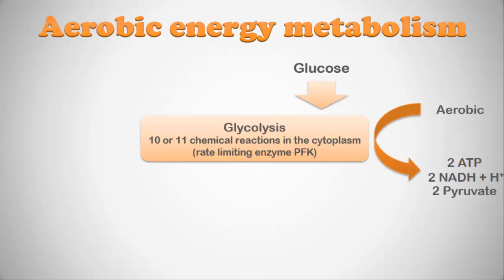Let's talk about aerobic glycolysis. Glycolysis is always anaerobic — what determines whether the overall process is aerobic or anaerobic is whether oxygen is available at the end. In aerobic glycolysis, we start mostly with glucose and get two ATP molecules, hydrogen ion carriers (NADH+H), and two pyruvate molecules. The key difference is what happens to those pyruvate molecules: without oxygen they become lactate; with oxygen they're converted into acetyl coenzyme A.